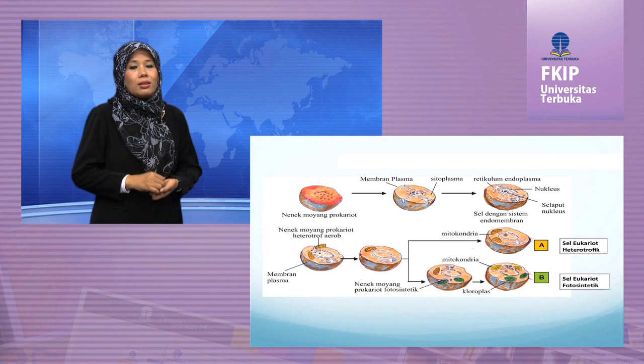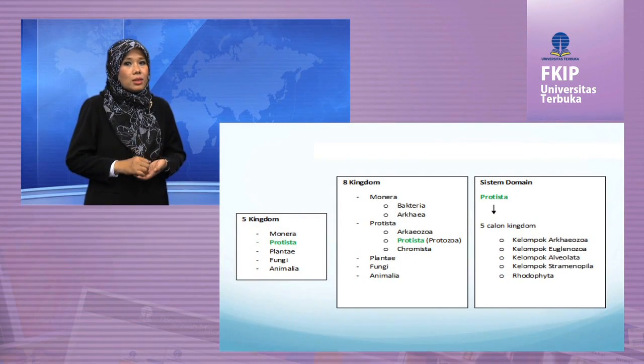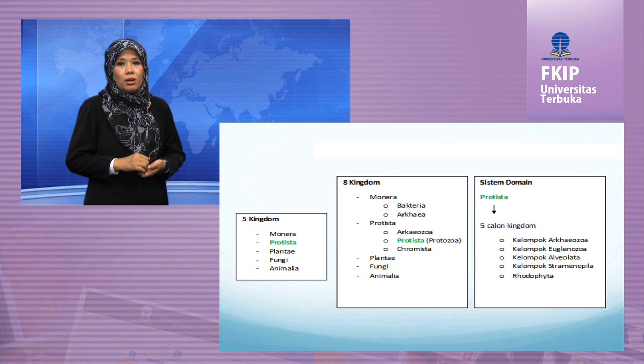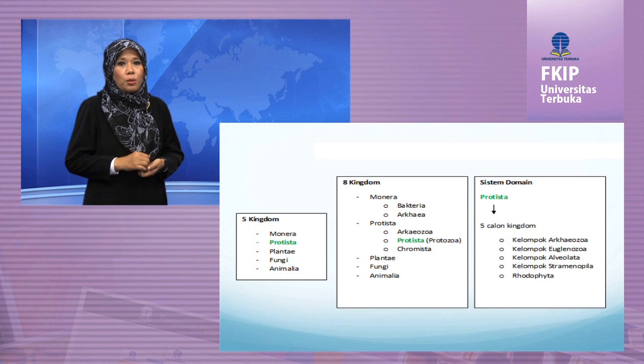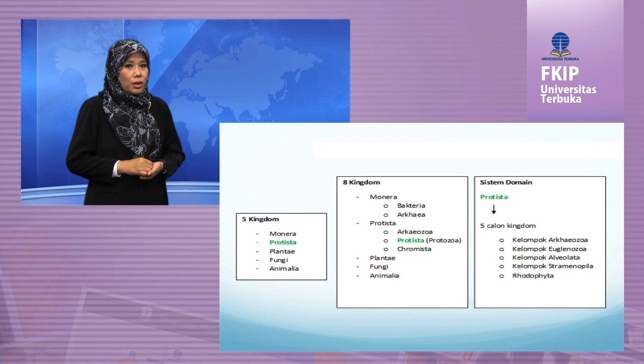Setelah kita mempelajari mengenai asal-usul protista, sekarang marilah kita sama-sama mempelajari tentang filogeni protista. Hingga saat ini dikenal beberapa sistem klasifikasi, yaitu sistem klasifikasi 5 kingdom, 8 kingdom, dan sistem domain. Kedudukan protista dalam masing-masing sistem tersebut dapat dilihat pada bagan berikut.